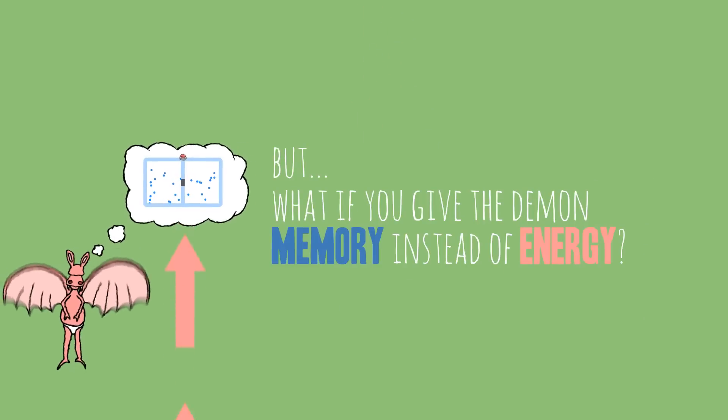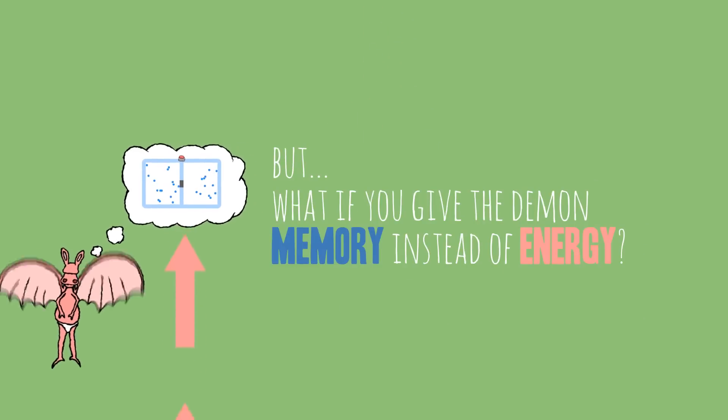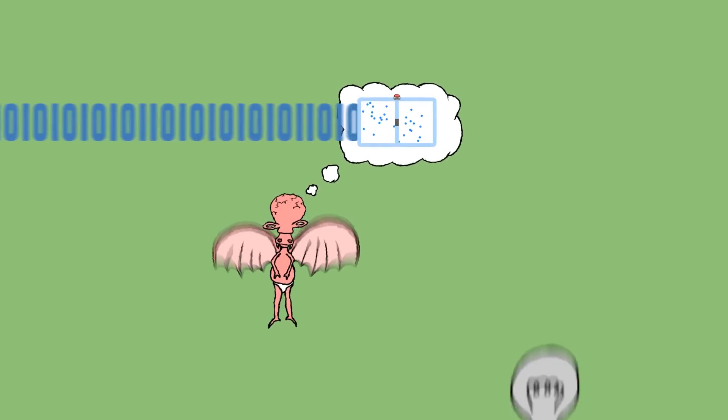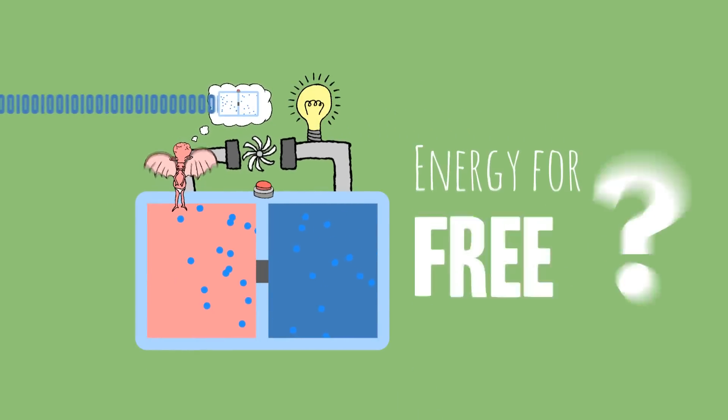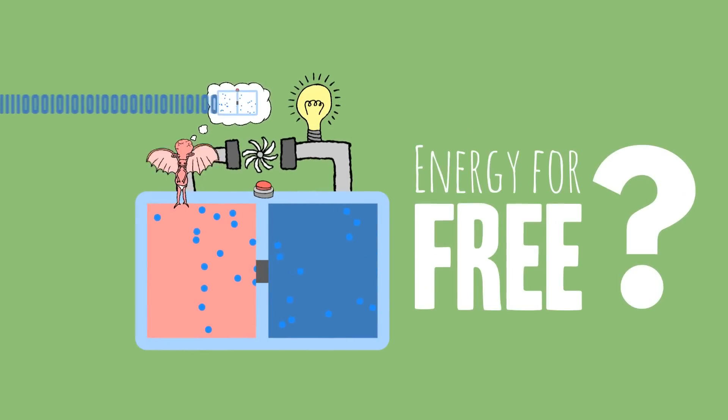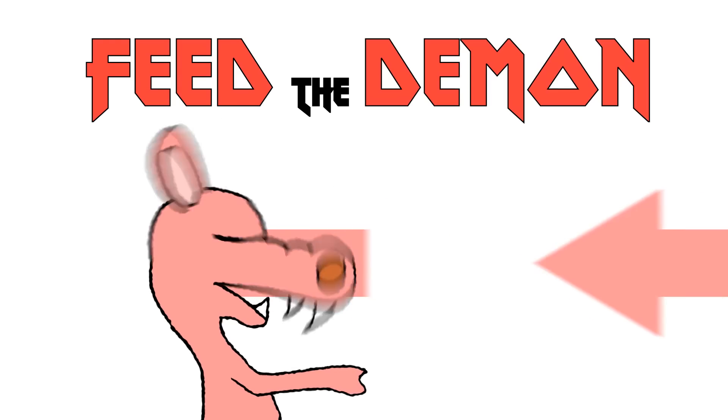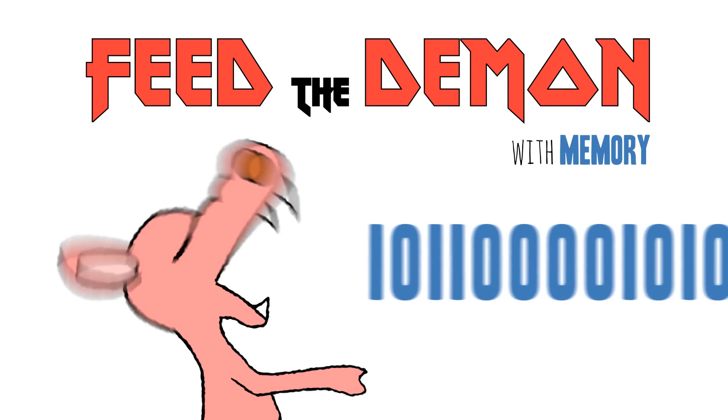But what if instead of giving the demon energy to update his memory, we just give him new unused memory? He could use it to track the particles, open the door at the right time, and get energy out of the box. Does that mean we're getting energy for free? Well, no. We still have to feed the demon, just with memory instead of energy.